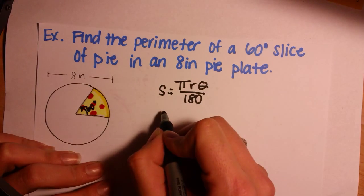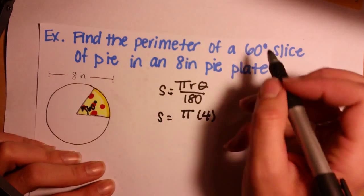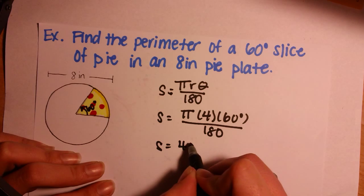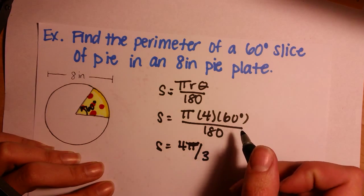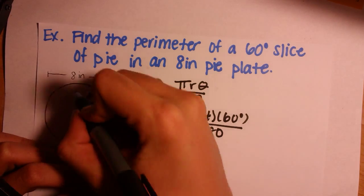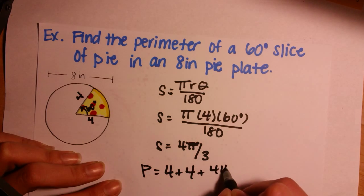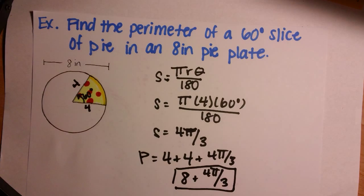So using the formula that had degrees, we had s equals πrθ over 180. So now we can substitute in s equals π times 4 because our diameter is 8, so our radius is 4. Theta, which is 60 degrees, all over 180. So we'll see that s is 4π/3. Now, we want to find the perimeter. So we must add the radius of 4 twice to get the entire perimeter. So the perimeter equals 4 plus 4 plus 4π/3, which equals 8 plus 4π/3. And we can leave our answer in this form. You can also convert 60 degrees to radians and use the radian formula as well if you prefer. But that is it for this lesson.